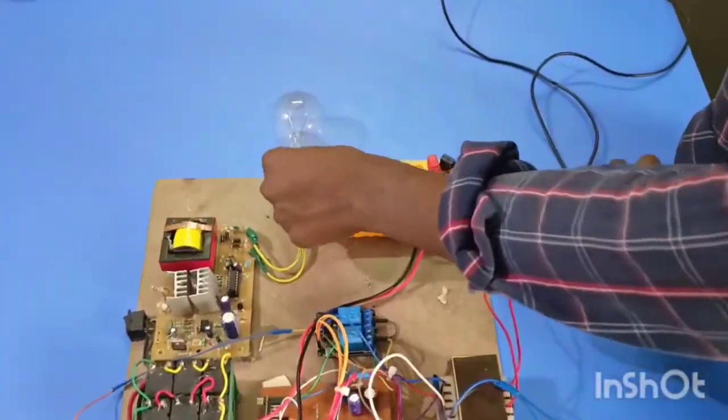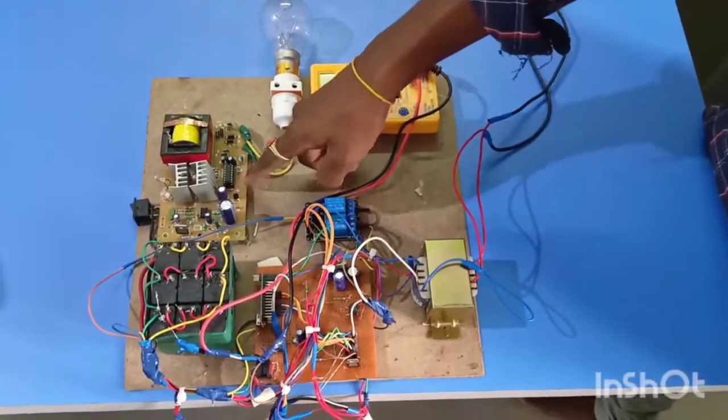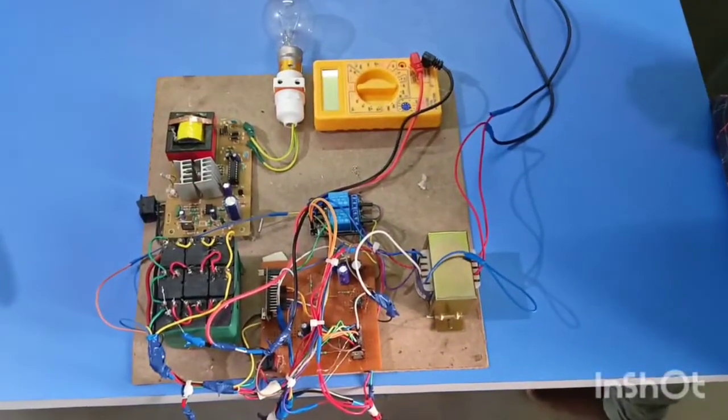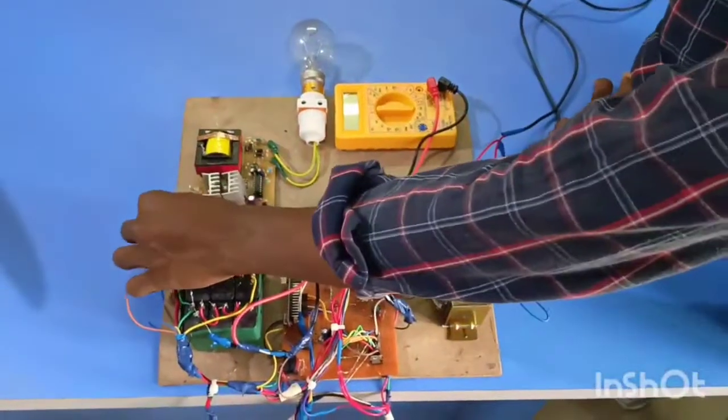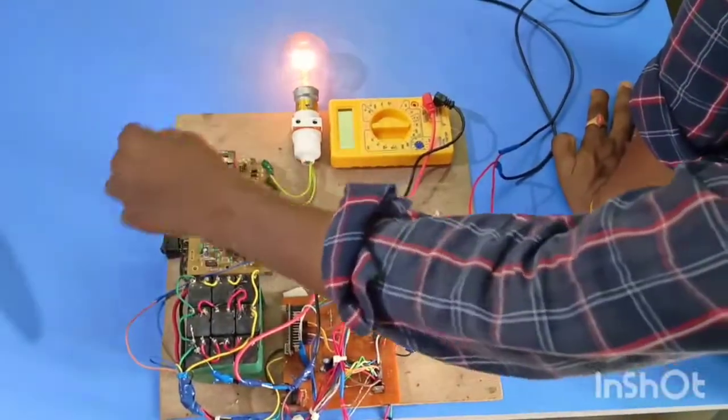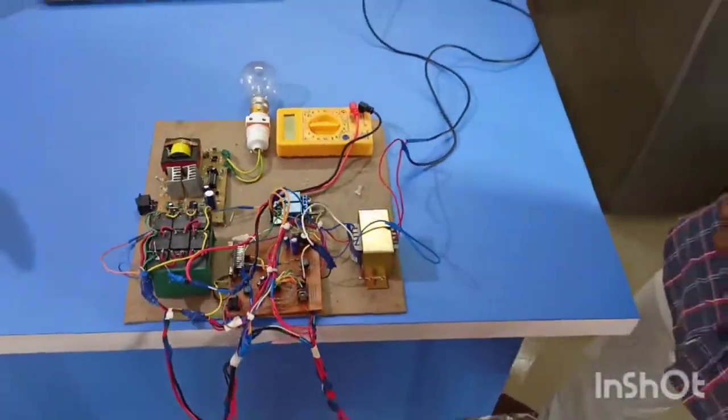This is the AC load we have used. This is a 100 watts capacity inverter. The complete load on this is 100 watts. Let me turn on the bulb. You can see whenever I turn on the bulb, the 12 volts is converting to 220 volts AC. So let me go to the working of this project.